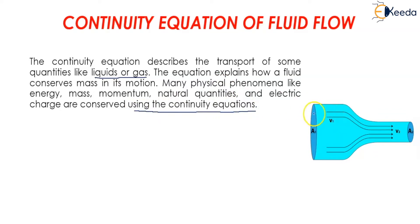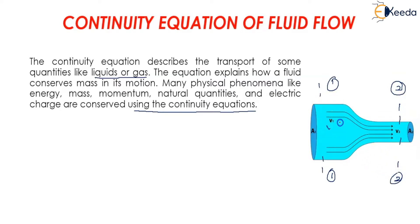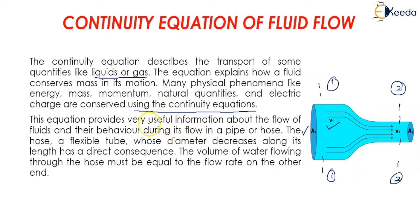Here we will be learning how a liquid or a gas transports from section 1 to section 2. We have velocity v1 and area a1 at section 1, and similarly v2 and a2 are the velocity and area respectively at section 2. The continuity equation provides very useful information about the flow of fluids and their behavior during flow in a pipe or a hose.